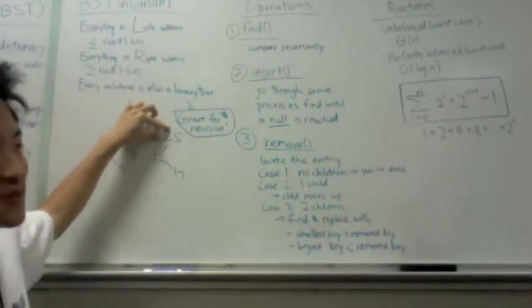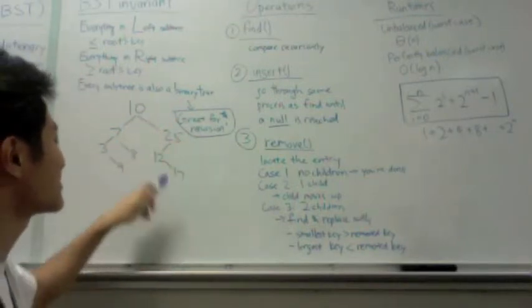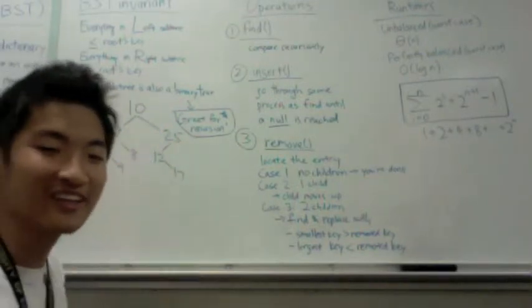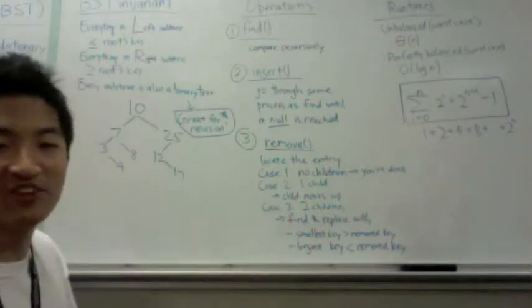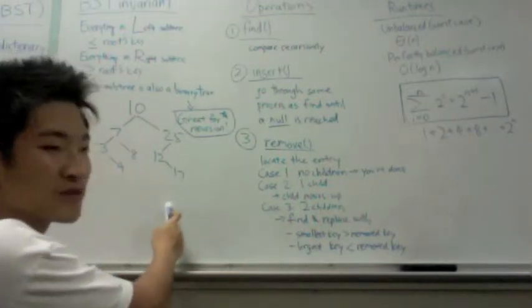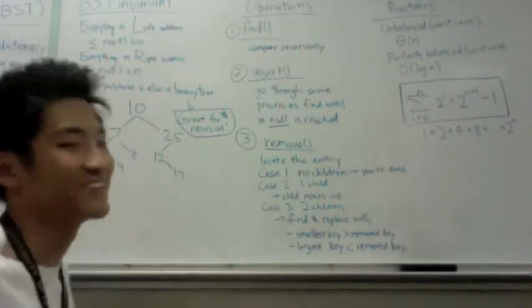you'd first compare 12 to 10. 12 is greater than 10, so you go to the right subtree. 12 is less than 25, so you go to the left subtree. And there's 12. If you don't find your element, you'll probably hit a null pointer, and that's when you should return null.